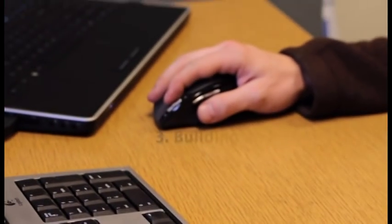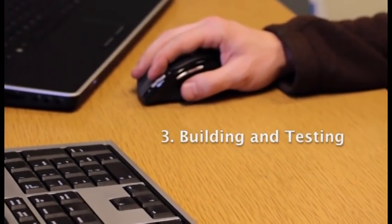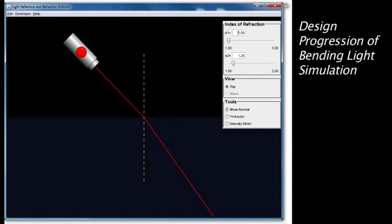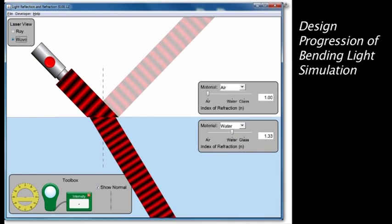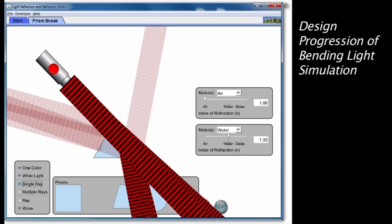After we storyboard the simulation, then the program developer starts programming it up. It's kind of a process, so we'll see an initial version of a sim, we'll discuss it in the team, we'll make changes, the developer will go back and program those. So we can get a lot of the kinks out before the student interviews.